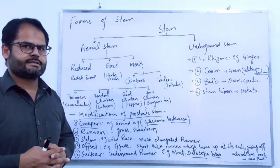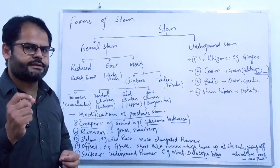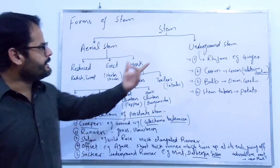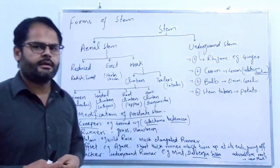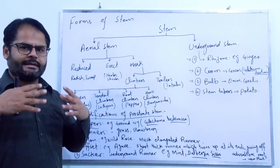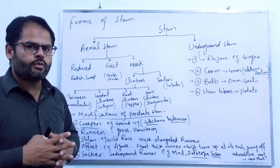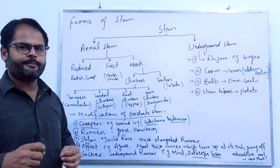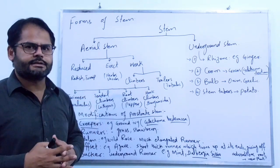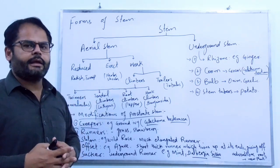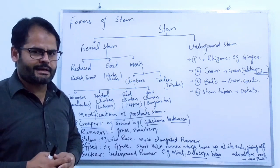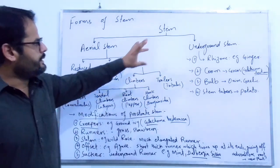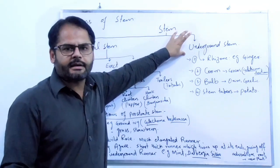The stem can be divided into two main categories. The first one is called aerial stem and the second one is called underground stem. Aerial stem is that kind of stem which grows above the ground — not underground — which is exposed to light, to air, and to environmental conditions and climate.